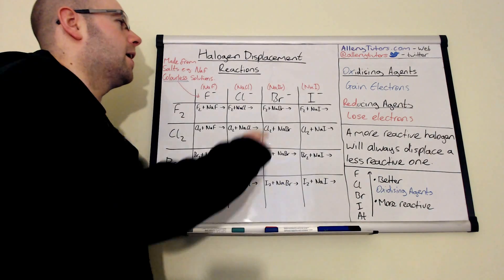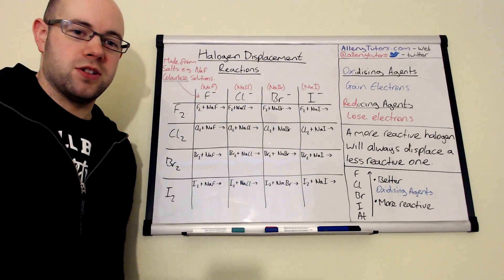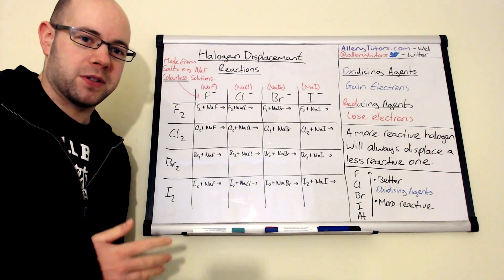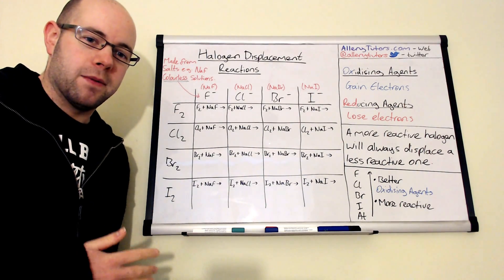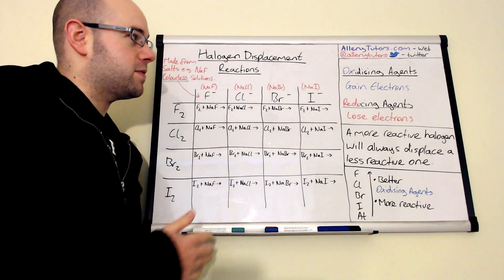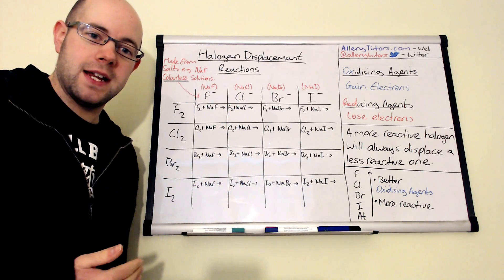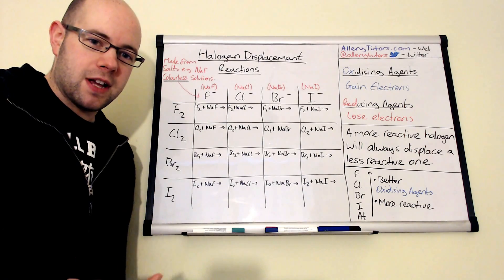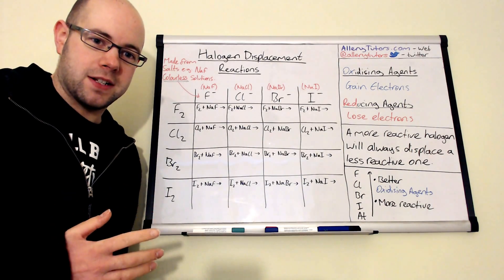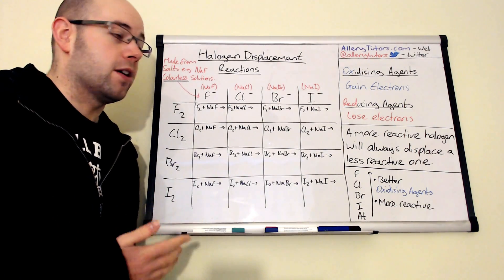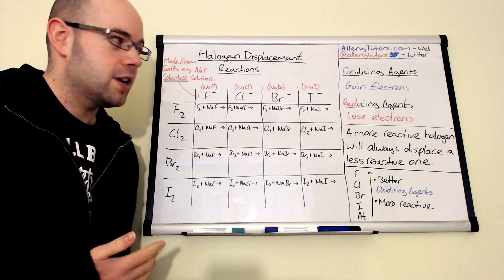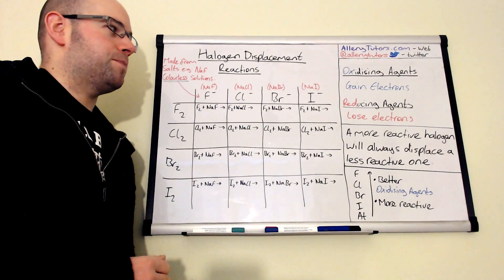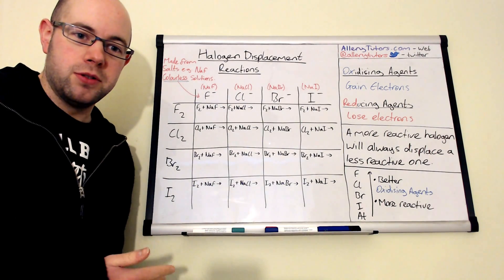We're going to start with what an oxidizing agent and a reducing agent is. This is a very important aspect because it allows us to explain what's happening in the displacement reaction. An oxidizing agent is something that will gain electrons — any species that will accept electrons. Atoms that are very electronegative are generally very strong oxidizing agents. Reducing agents are chemicals which will reduce another chemical and hence they will lose electrons.